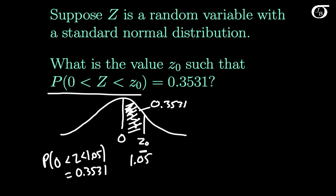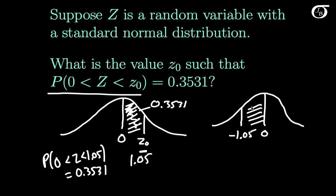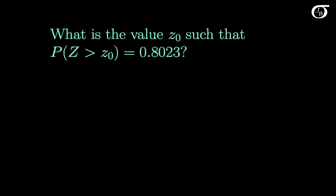Another important tidbit is that the curve is symmetric about 0. So if we draw this out, at minus 1.05 the area between that and 0 is also 0.3531, because the standard normal distribution is symmetric about 0. The table does not give negative values of Z — it only gives positive values — because we can always figure out the negative side using the symmetry argument. Let's look at an example of that.